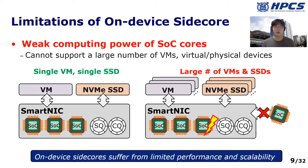However, I/O performance can be severely bounded by SoC cores' weak computing power. Our data show that even with eight SoC cores, their weak computing capability becomes the performance bottleneck. In addition, SoC side-core designs cannot support a large number of virtual and physical devices due to their limited computing capabilities. These scalability issues will become more serious as storage devices get faster in the future.